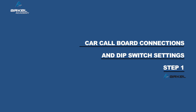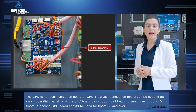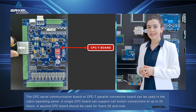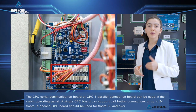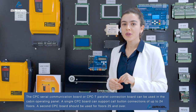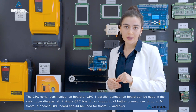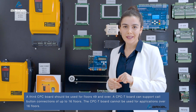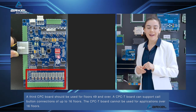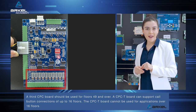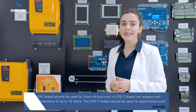Car call board connections and dip switch settings. The CPC serial communication board or CPC-T parallel connection board can be used in the cabin operating panel. A single CPC board can support call button connections of up to 24 floors. A second CPC board should be used for floors 25 and over, and a third CPC board for floors 49 and over. A CPC-T board can support up to 16 floors and cannot be used for applications over 16 floors.